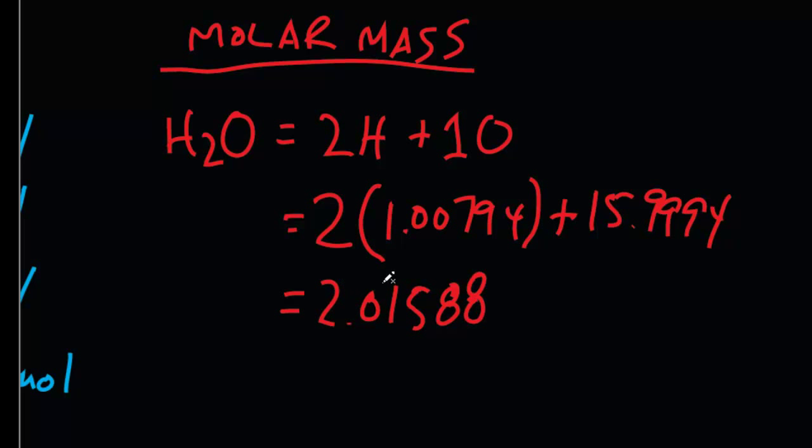1.00794 times 2 is going to be 2.01588. Let's double check the number of significant figures: 1, 2, 3, 4, 5, 6. They match. We add that to 15.9994 grams per mole, and we get 18.01528.